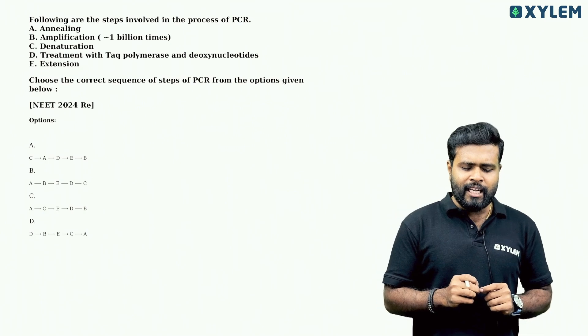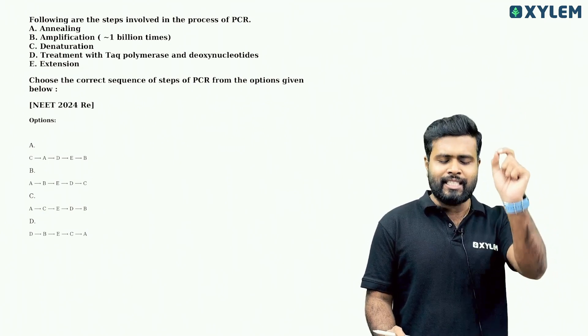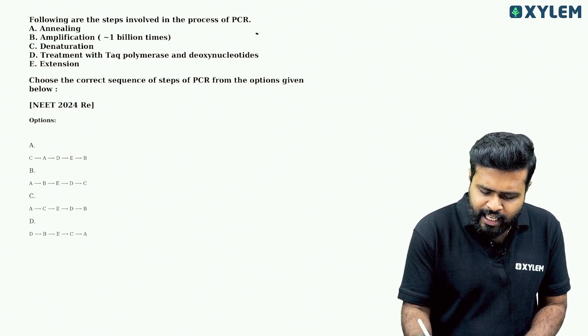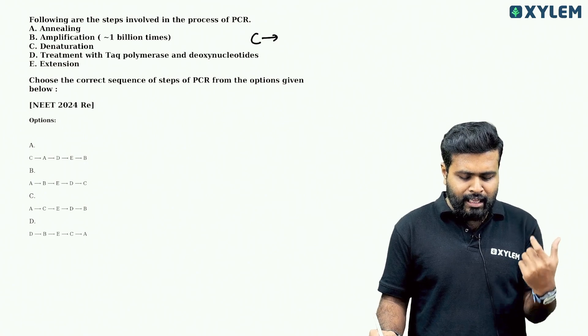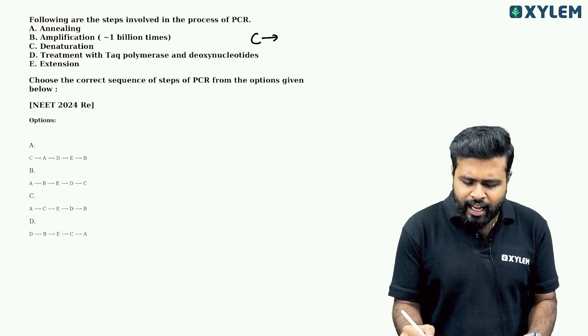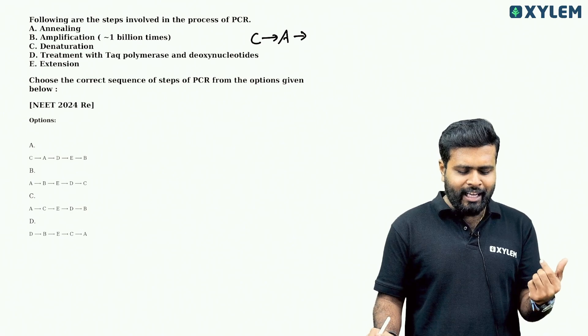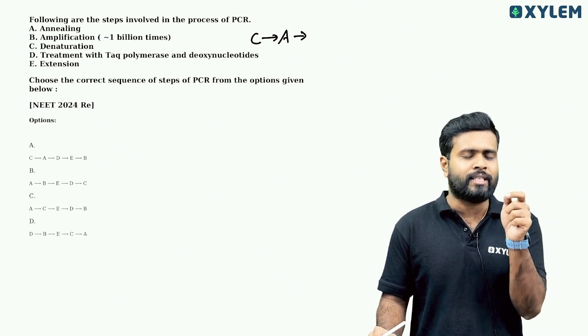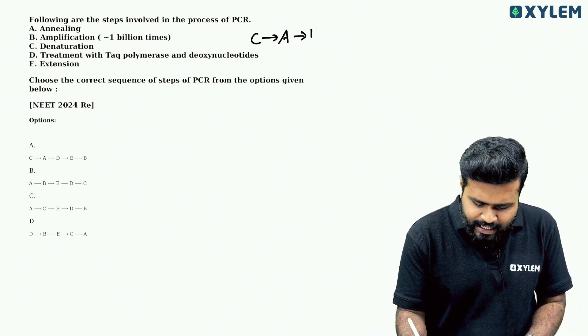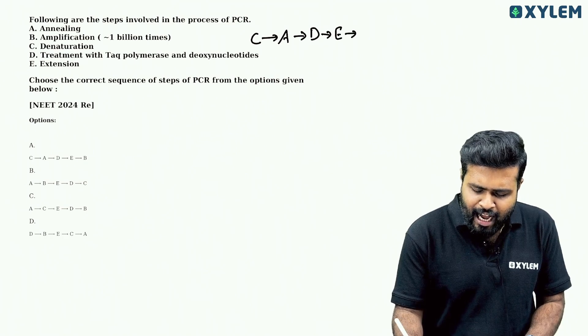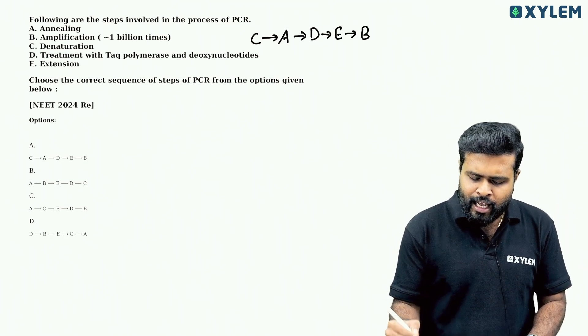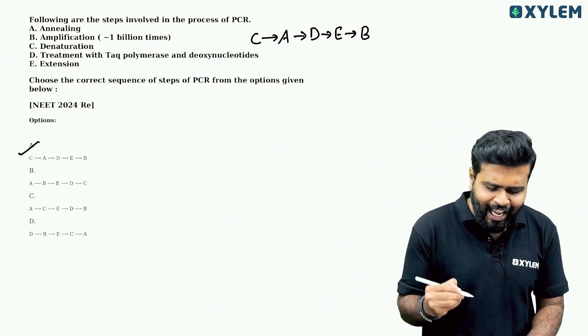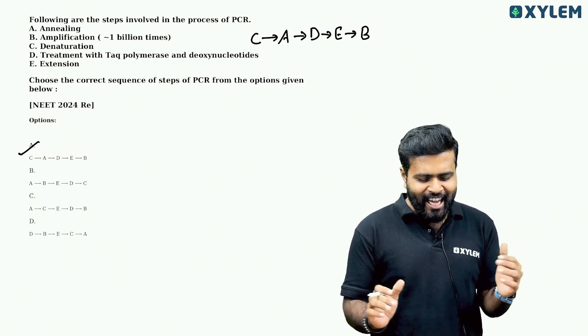Next question. Following are the steps involved in the process of PCR. Choose the correct sequence of steps of PCR from the options given below. The answer is option A.